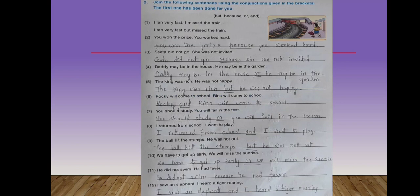Fourth one: daddy may be in the house or he may be in the garden. Fifth one: the king was rich but he was not happy. Sixth one: Rocky and Reena will come to school. Seventh one: you should study or you will fail in the test.